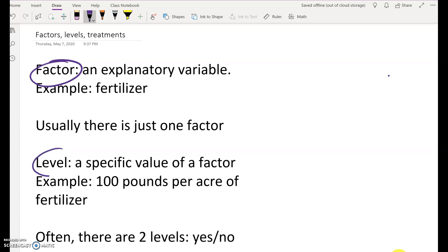Now, let's talk about levels. So a level is a specific value of a factor. For example, 100 pounds per acre of fertilizer would be a level.